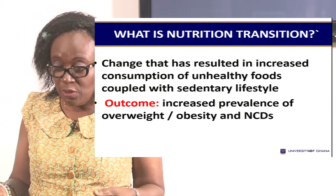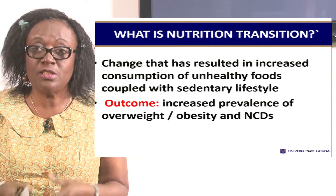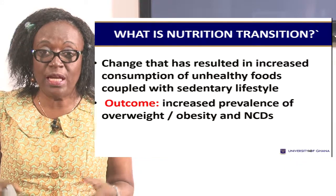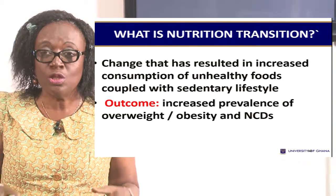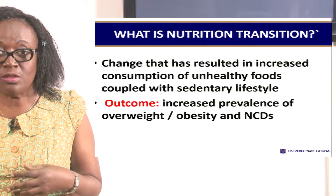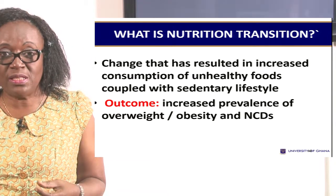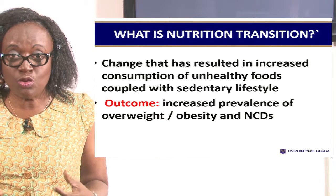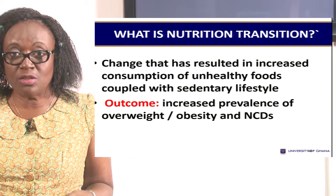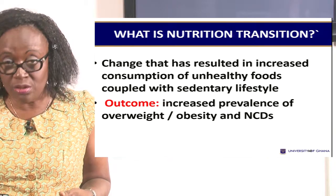When we talk of non-communicable diseases, it means that when you have it, it is you alone who has that disease. For example, diabetes — when somebody has diabetes, you cannot infect somebody else. And overweight and obesity has been found to be one single determinant of non-communicable diseases in the world.